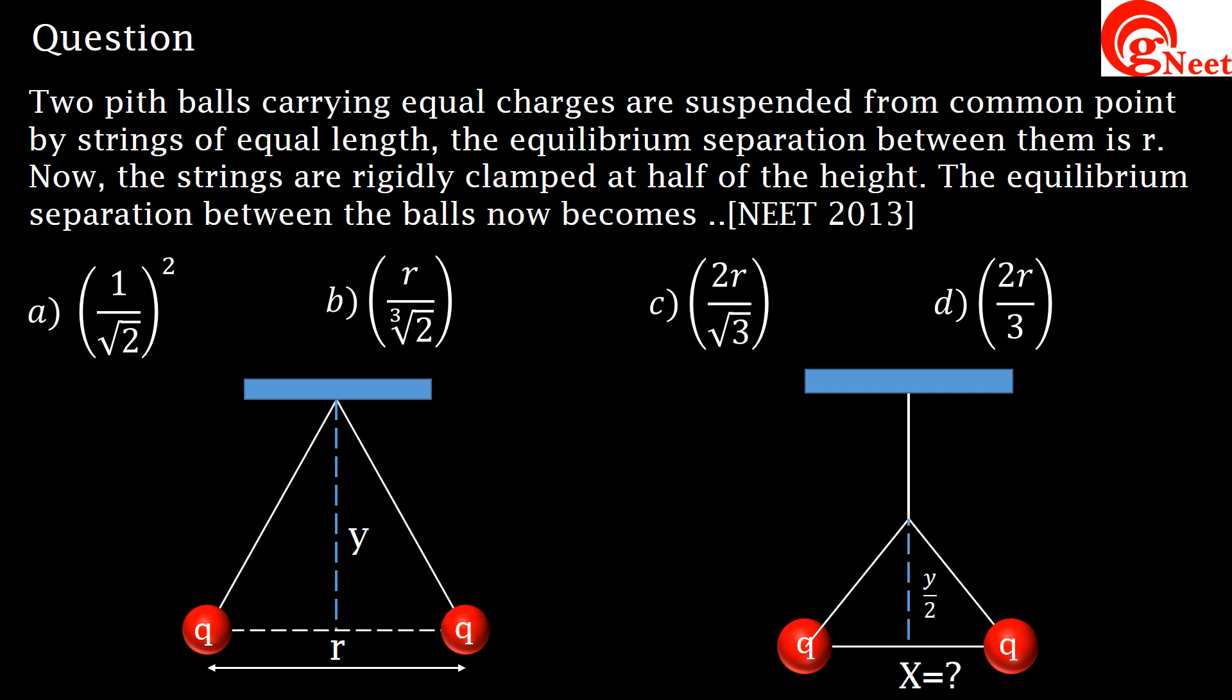The equilibrium separation between them is R as shown in figure case 1. Now, the strings are rigidly clamped at half of height as shown in figure case 2.